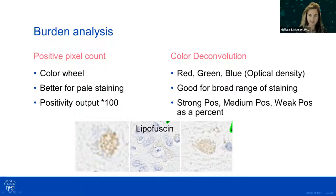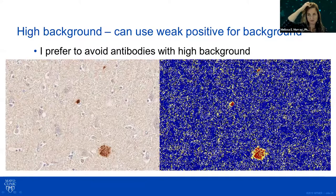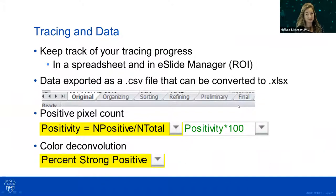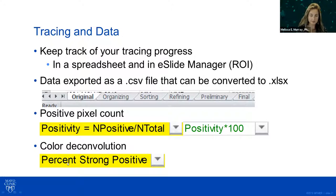I like color deconvolution when there's a broad range of staining — it uses red, green, and blue components; it's based upon optical density. You can adjust accordingly and use different levels to your advantage, for example setting weak positive as your background. I keep in mind lipofuscin — I go above approximately 185. The results can be exported as a CSV file convertible to Excel. With color deconvolution it automatically comes out as percent, so you don't have to multiply.